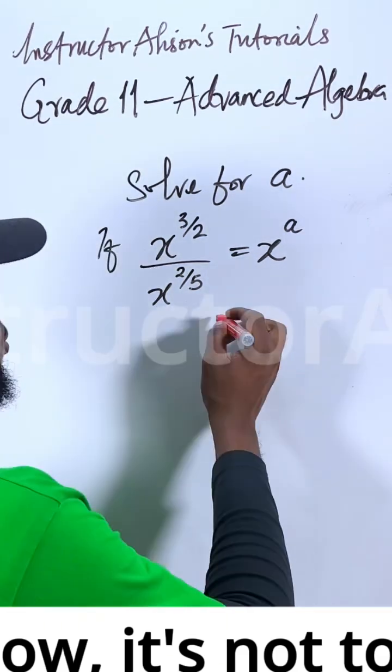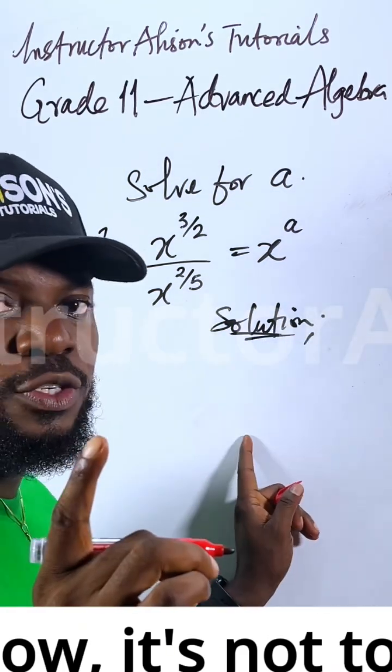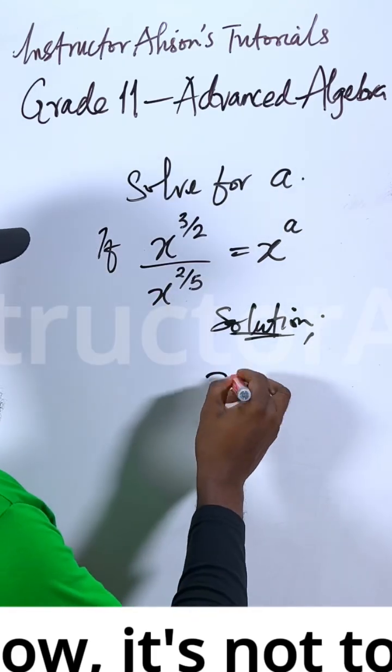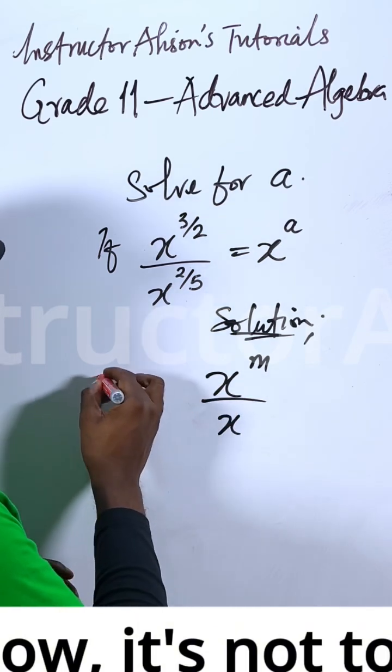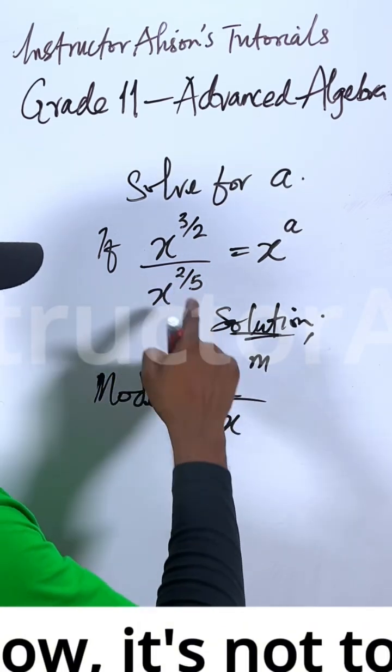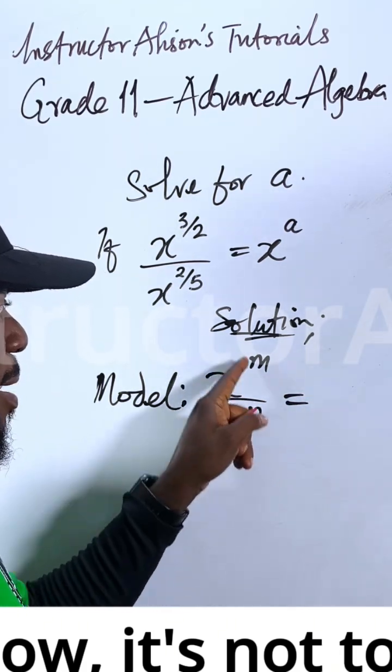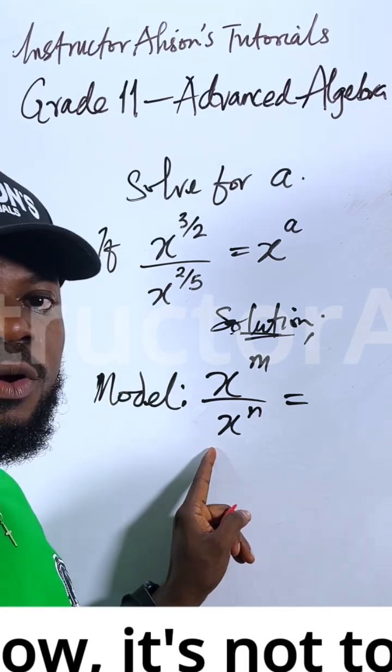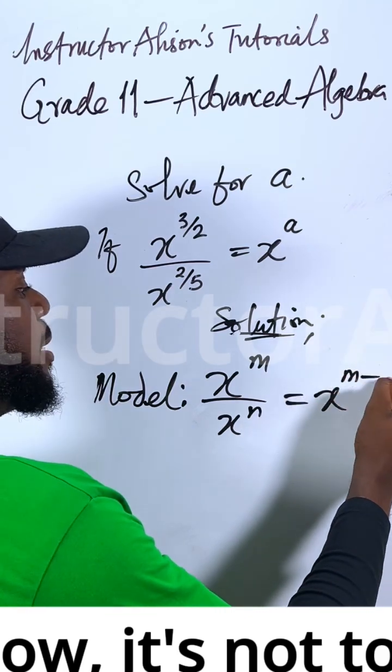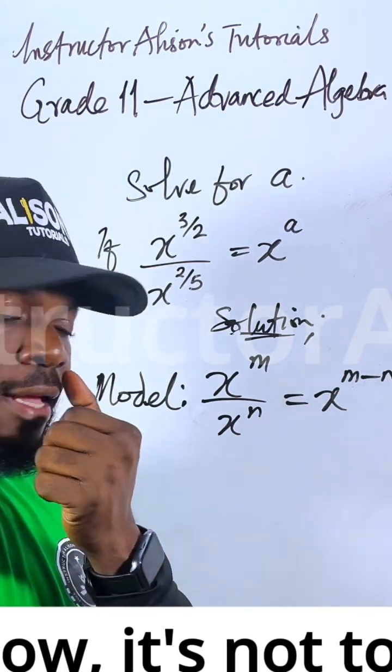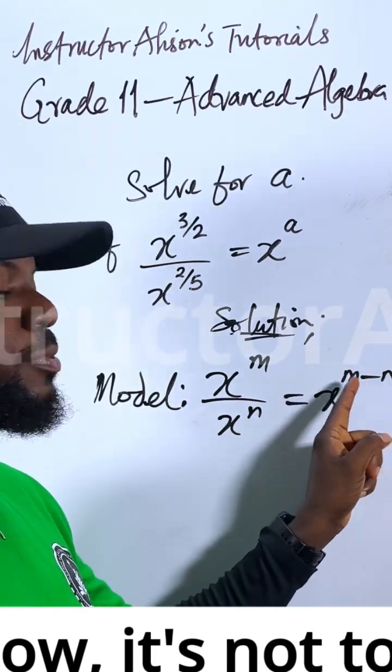The first thing to do is check which law of exponents aligns with this. I'll recall the division law because I'm having division here. The division law states: x to the power of m divided by x to the power of n equals x to the power of m minus n. This is the model I'll apply for this problem. Whenever I have a common base, when the bases are the same, you consider one of the bases and equate the powers. If it were multiplication you add the powers, if it's division you subtract.